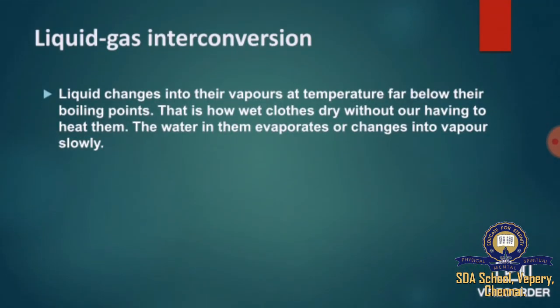Next, we move on to liquid-gas interconversion. Liquid can be changed into vapors at temperatures far below their boiling points. That is how wet clothes dry without having to heat them — the water in them evaporates or changes into vapor slowly. Similarly, when we take wet cloth at home, we observe that after an hour it will be dry without any heat, because the water evaporates or changes into vapor slowly.